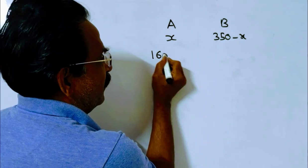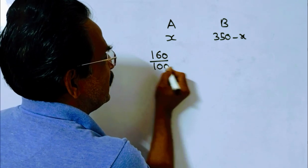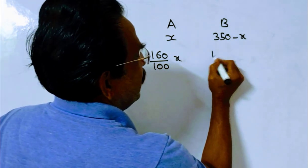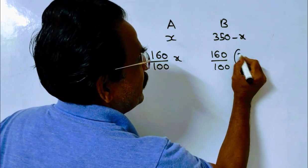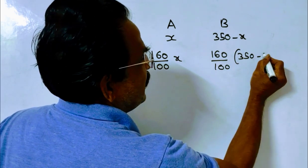So, the marked price of article A is 160% of X and marked price of article B is 160% of 350 minus X.